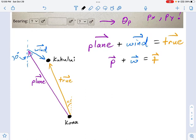The plane has to overshoot Kahului so that when you add the plane vector and the wind vector together, you get the target, the true vector. That's what I've described in this equation right here. Plane plus wind equals true. I'm just reducing that to an equation P plus W equals T in vector form.